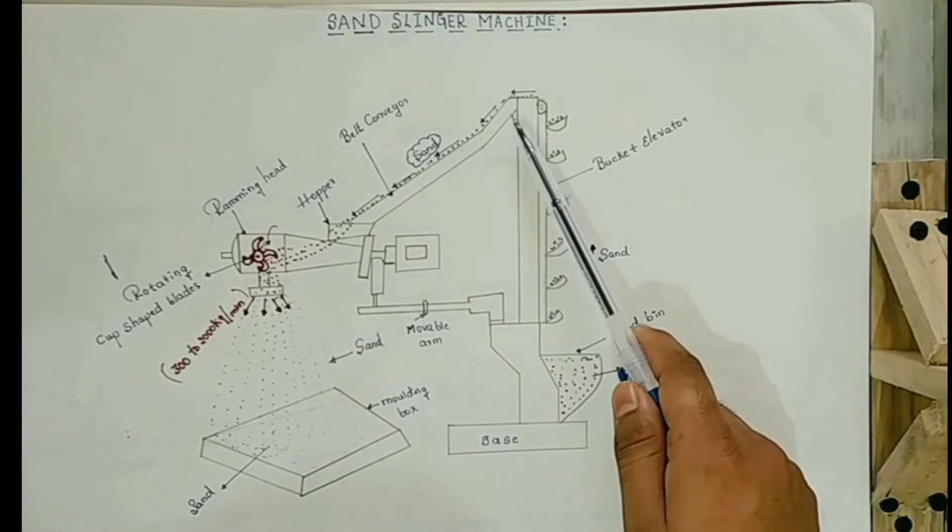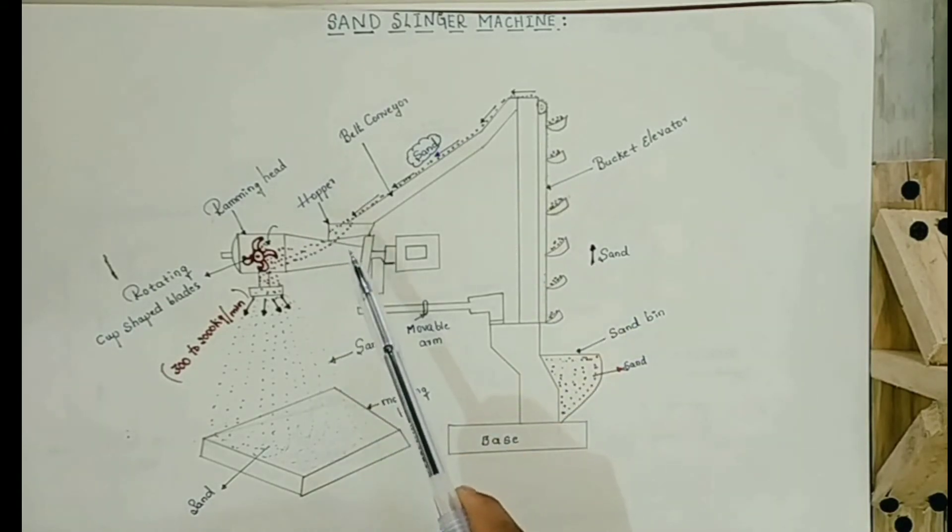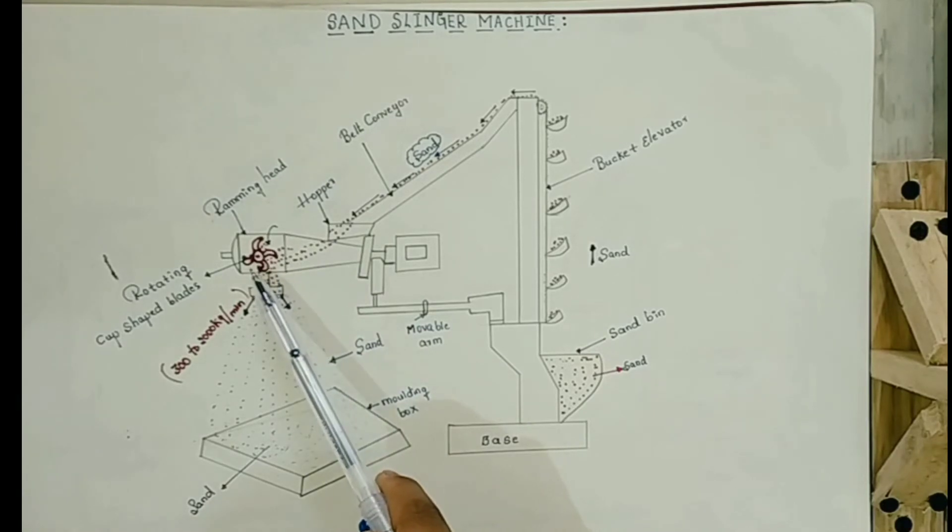And conveyor bed is helpful to move the sand from the bucket elevator to the hopper. Then hopper wheel helps to direct the sand to the ramming head. And ramming head consists of a rotating blade which throws the sand towards the downward direction into the moulding box.